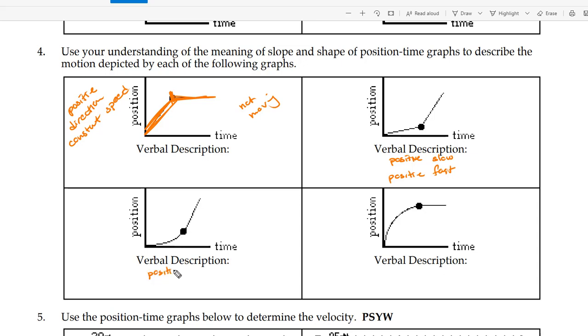Here you have positive constant speed. Still positive but here you're going fast to slow and then not moving.